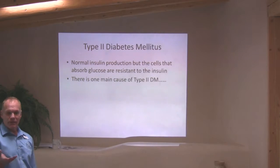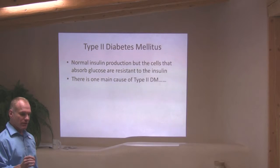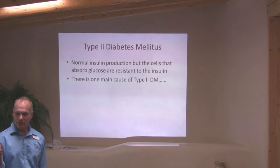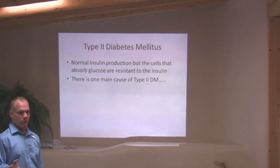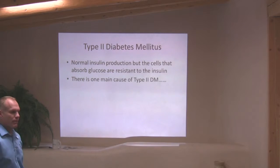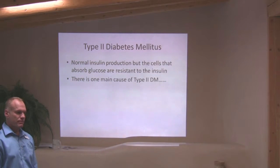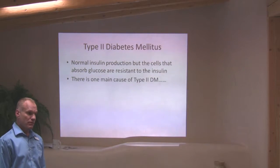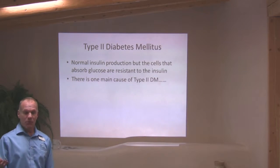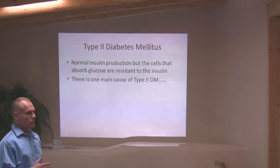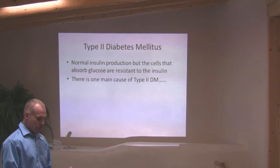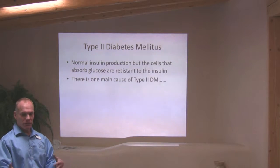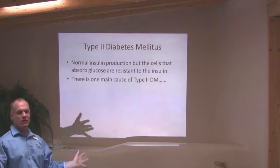Diabetes mellitus type 2 is different. Your body has been bombarded by too much sugar for too long, and finally the insulin receptor doesn't recognize the insulin anymore. It's like the story of the boy who cried wolf — the villagers stopped believing him because he'd cried wolf so many times. Same thing here: the cells don't believe you anymore because insulin has been released into the bloodstream so many times that they just don't see it anymore.